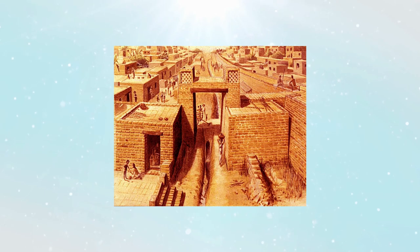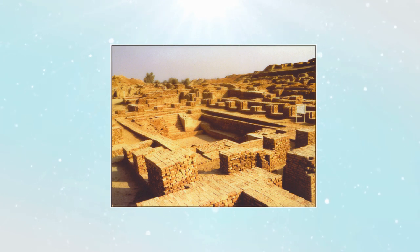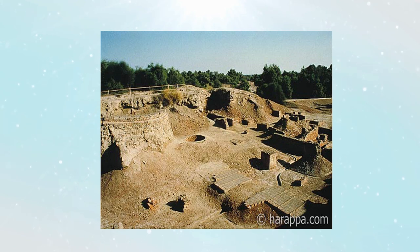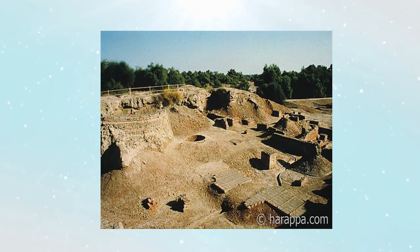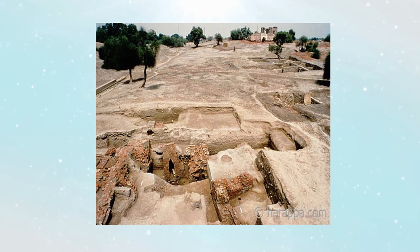Here is a reconstructed view of Harappan urbanization, and here is the original excavated city of the Harappan civilization. You can see big crater-like structures — these were the famous granaries used to store grains in the Harappan cities. Here is yet another view of the Harappan city. Now let us come to the Mauryan Empire in the post-Harappan period.